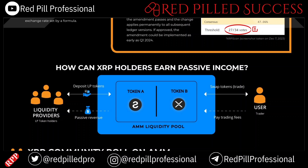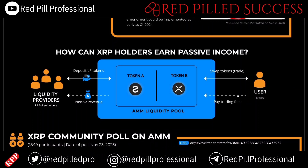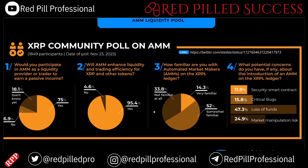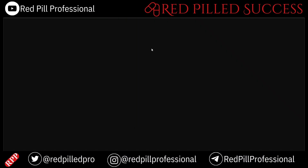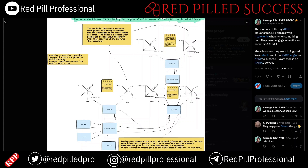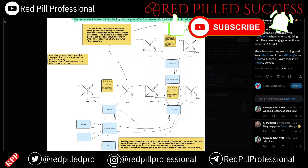For example, an AMM LP could be between Sologenic and XRP, and those would be traded against each other. The trader would pay trading fees and receive tokens in the trade, and LPs would deposit token A or token B and receive passive income off of that. Here's some more information on the involvement of Sologenic with the XRPL AMMs.